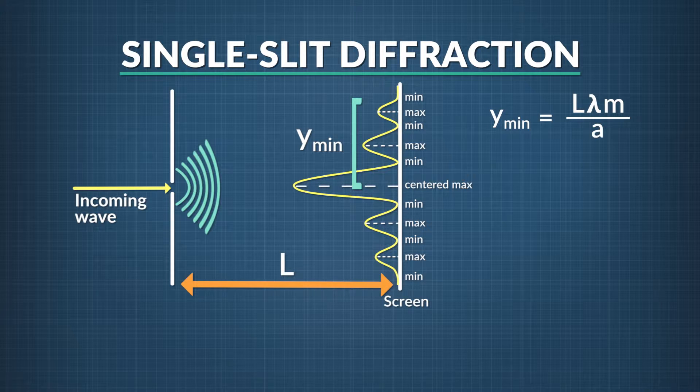L is the distance from the slit to the screen. Lambda is the wavelength of the incoming wave. And m is a whole number, called the order number, telling which minimum we are referring to.